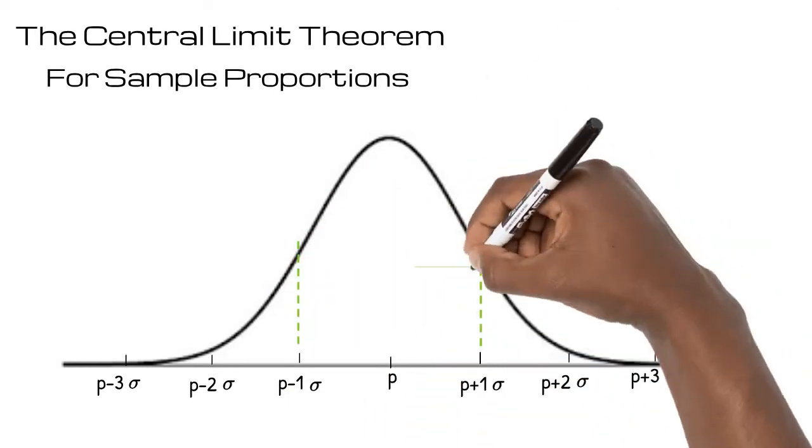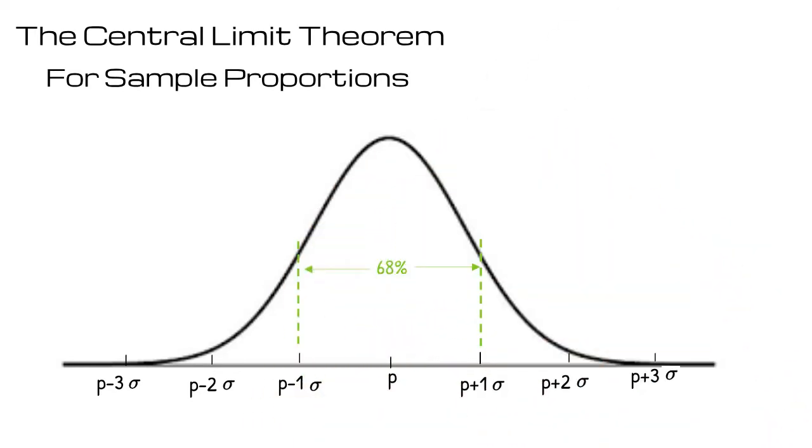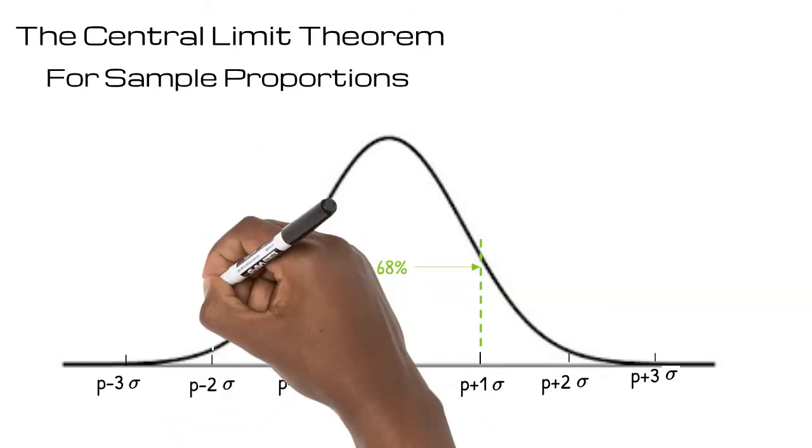68% of proportions lie between one standard deviation below and one standard deviation above the actual proportion.